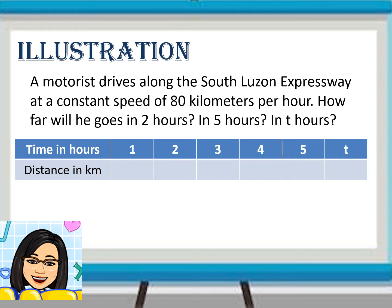In the first hour, he runs 80 kilometers. So, definitely, in 2 hours he will have traveled 160 kilometers. Can you guess the distance traveled in 3 hours? Yes, it is 240 kilometers. How did you get it? By multiplying time by 80.